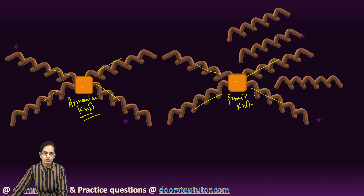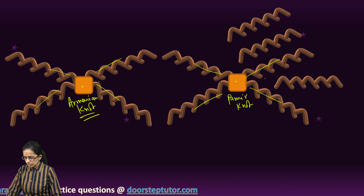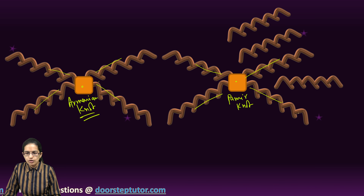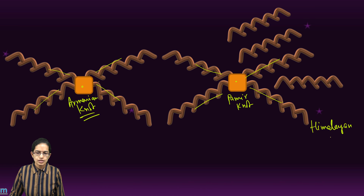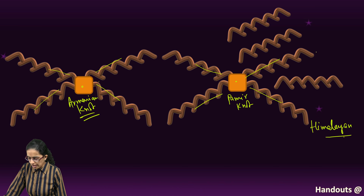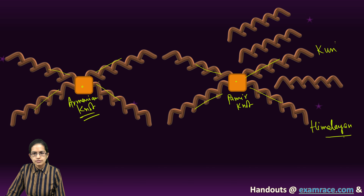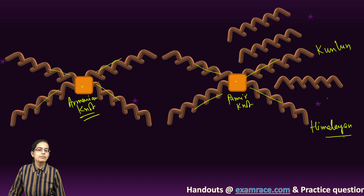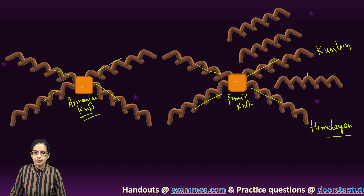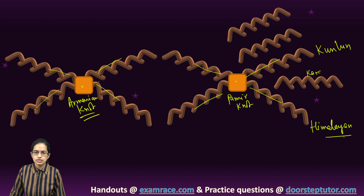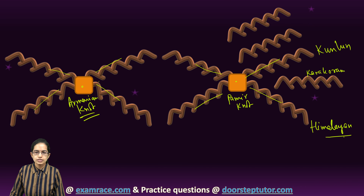Let's start with the Pamir knot. In the Pamir knot, towards the south we have the Himalayan mountain range. In the north we have the Kunlun mountain range, and between the Himalayan and the Kunlun there is an important mountain range which is the Karakoram mountain range.